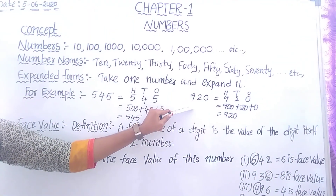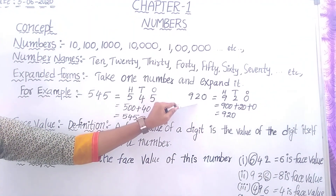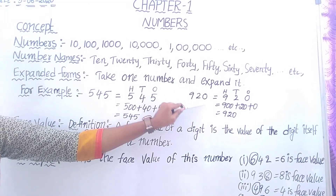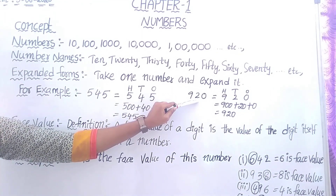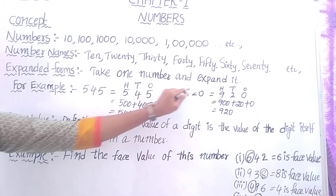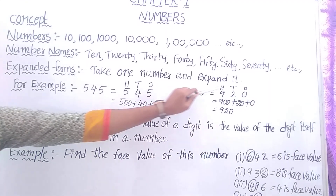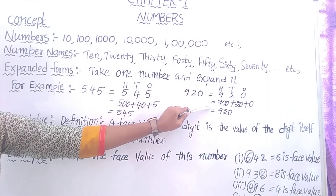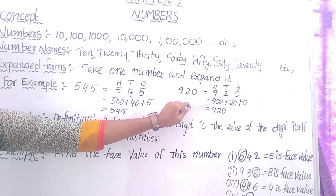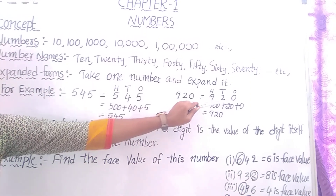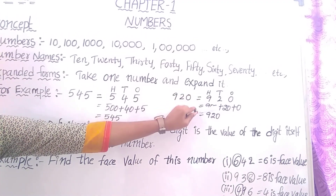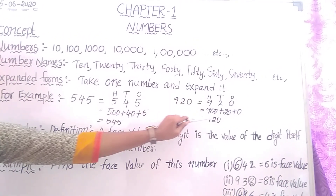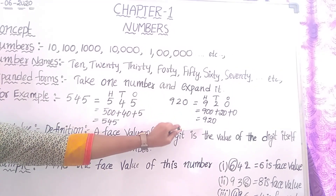Take another example: 9, 2, 0. First, find out the places of this number: 0 in 1's place, 2 in 10's place, 9 in 100's place. So: 9 in 100's place is 900; 2 in 10's place is 20; 0 in 1's place is 0. Equal to 920.